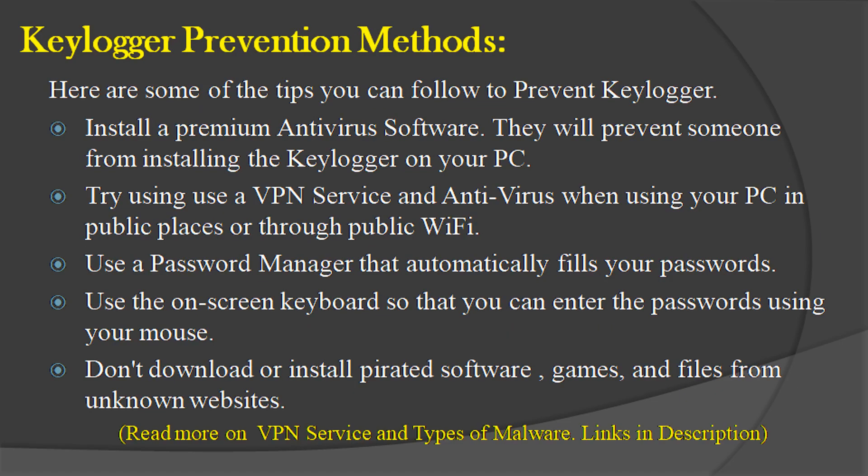Keylogger prevention methods: here are some tips you can follow to prevent Keyloggers. Install a premium antivirus software — it will prevent someone from installing a Keylogger on your PC. Try using a VPN service and antivirus when using your PC in public places or through public Wi-Fi. Use a password manager that automatically fills your passwords. Use the on-screen keyboard so that you can enter passwords using your mouse. Don't download or install pirated software, games, and files from unknown websites.